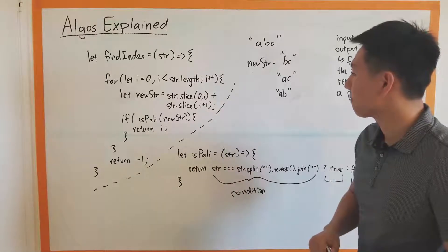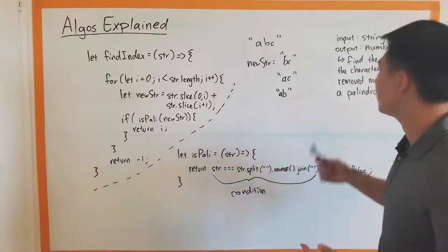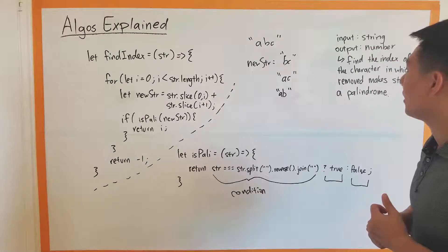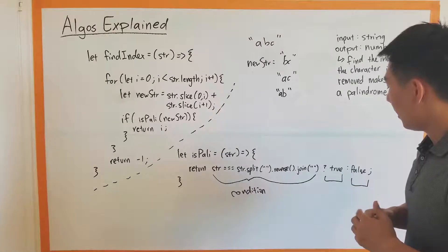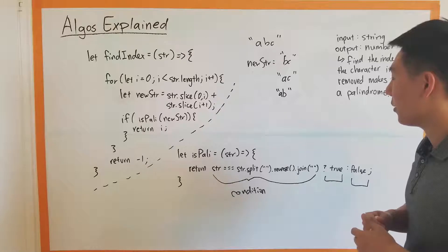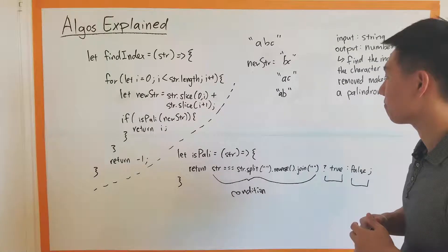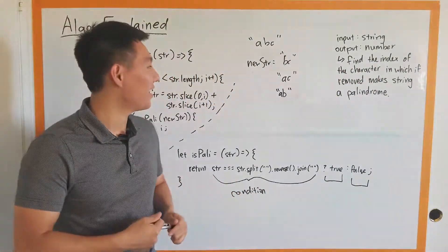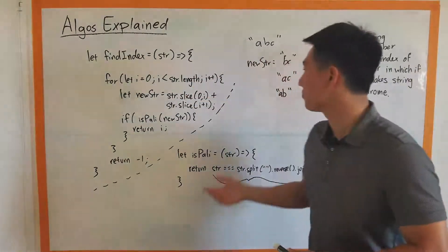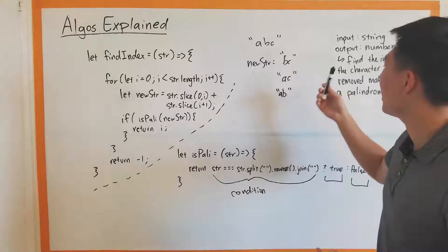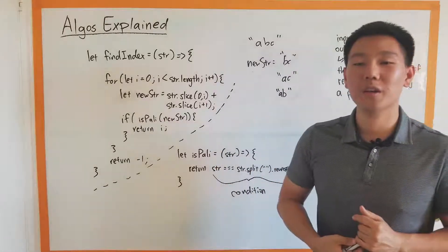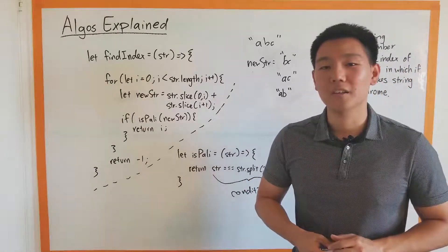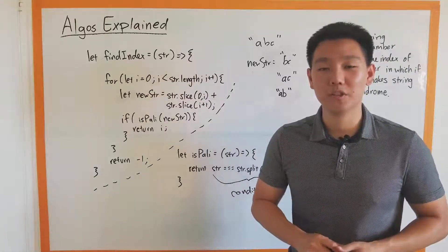That kind of proves our function works correctly. If you have any questions, comment below. That's the question of finding the index of a character such that if you take it out, the string is a palindrome. My name is David Kim — thanks for joining me today. This was Algo's Explained. Like, comment, and subscribe, and I'll see you in the next one.